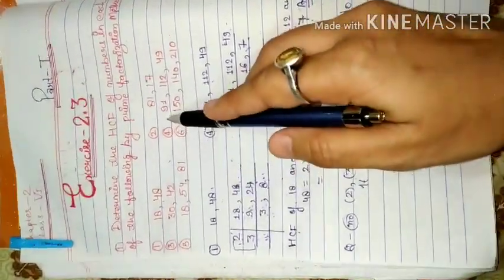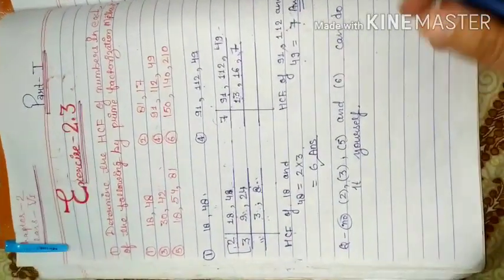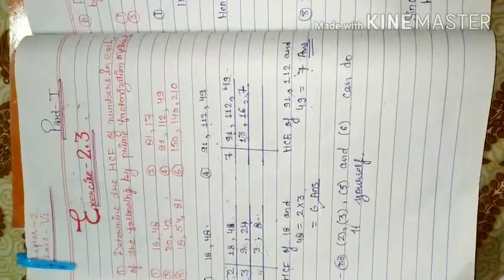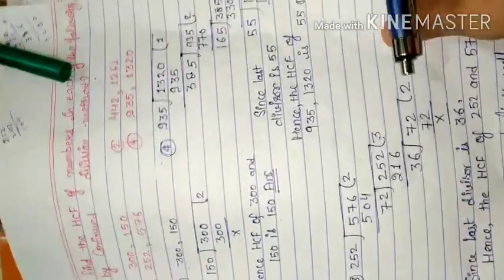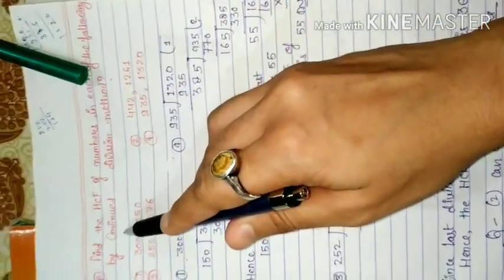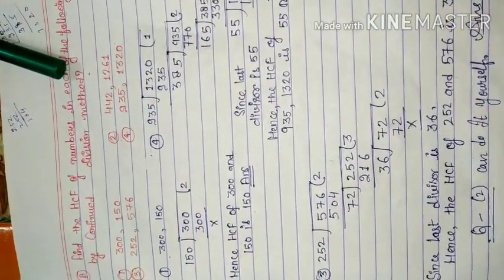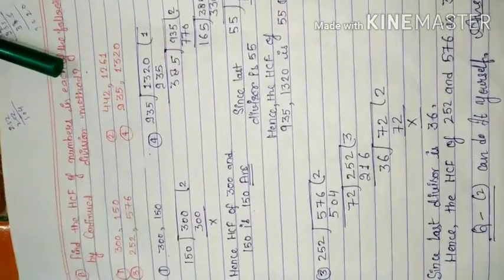Question number 3 is 5 and 6. If you don't understand, comment me and I will tell you the answer. Question number 2: find the HCF using continuous division method. Now see, we have to find HCF but we have to use the division method.